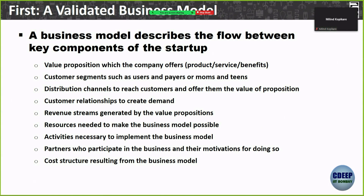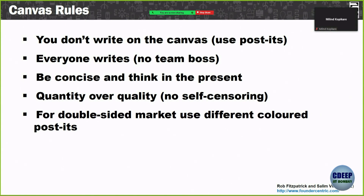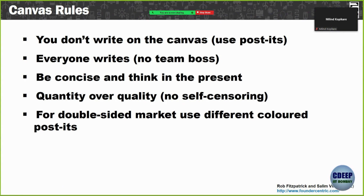One thing to note is that you don't write on the canvas alone — use post-its as a team. Don't be bossy or act as if you know everything — it should be a team effort. Be concise, think in the present. Initially, quantity over quality — when brainstorming, don't worry about quality, just keep writing. We do this in naming exercises for startups where there is no right or wrong name — you write for one hour as a team.